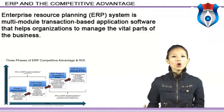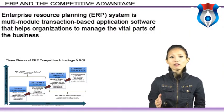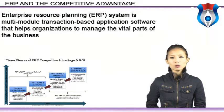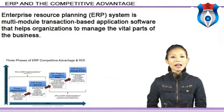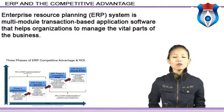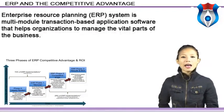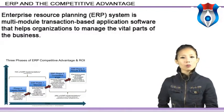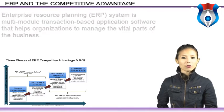For example, when Dow Corning implemented SAP, they found that features of the legacy system offered more functionality than the ERP that replaced them. While there has been extensive research on the issues concerning implementing these systems and achieving the promised benefits, less research has been done on ERP systems in relation to competitive advantage.